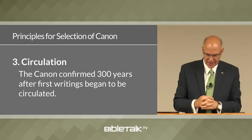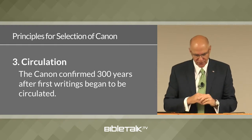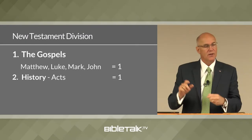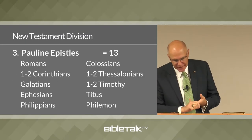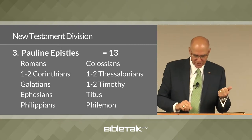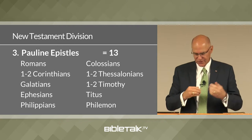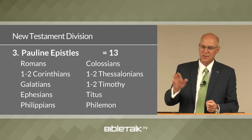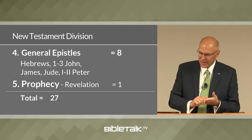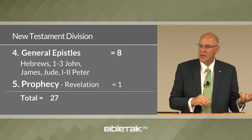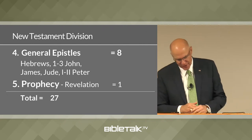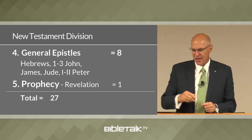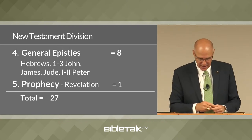When the New Testament was finally completed, the 27 books were divided into five groups. First, the Gospels: Matthew, Mark, Luke, and John. Second, history: the book of Acts. Third, the Pauline epistles: Romans, 1st and 2nd Corinthians, Galatians, Ephesians, Philippians, Colossians, 1st and 2nd Thessalonians, 1st and 2nd Timothy, Titus, and Philemon. Fourth, the general epistles: Hebrews, James, 1st and 2nd Peter, 1st, 2nd, and 3rd John, and Jude. Fifth, prophecy: the book of Revelation — for a total of 27 books.